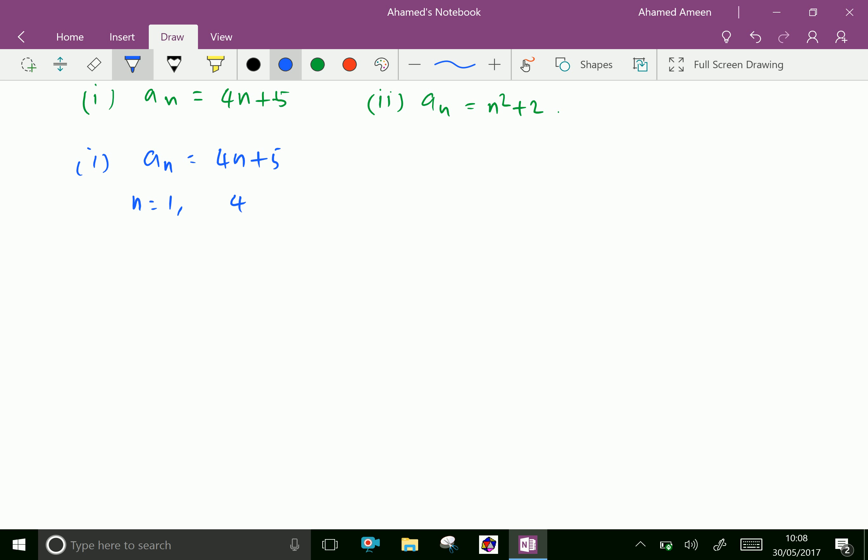Put n equal to 1. We get 4 into 1 plus 5 equal 4 plus 5 is 9. n equal 2. That is 4 into 2, because in place of n we are putting 2, plus 5 equals 8 plus 5 is 13.